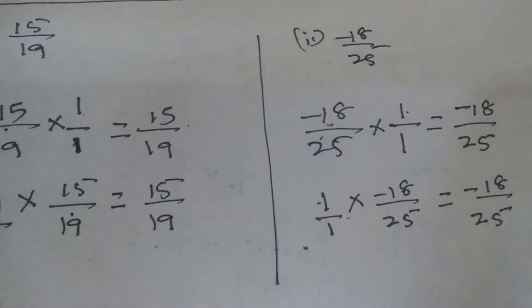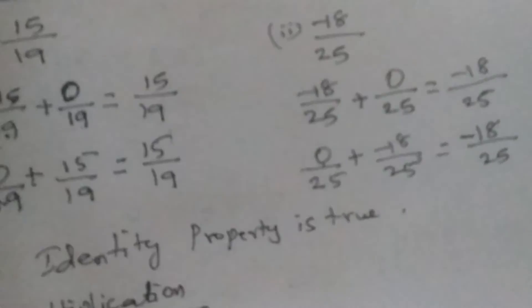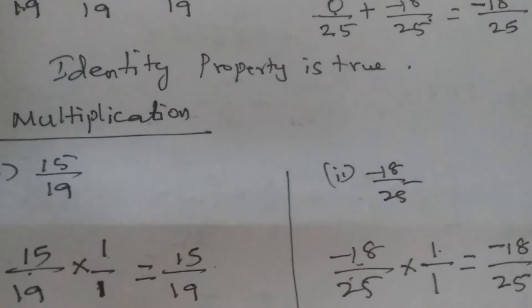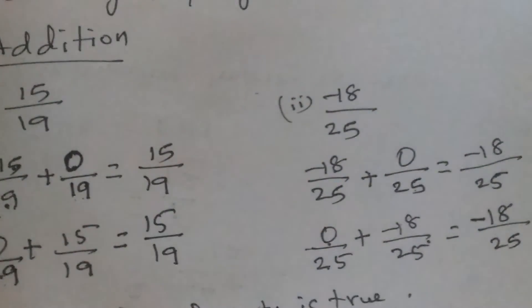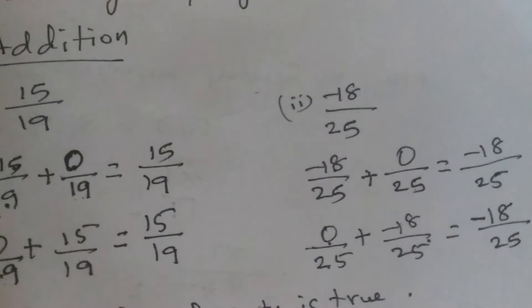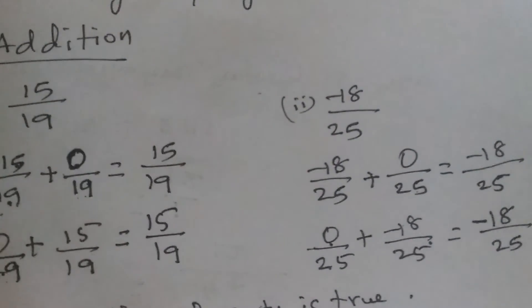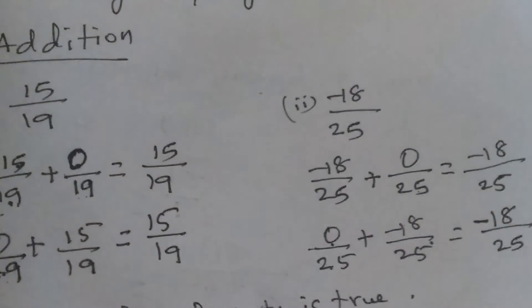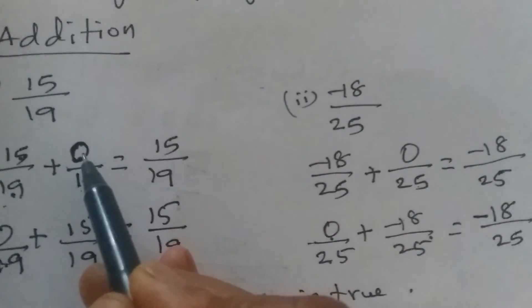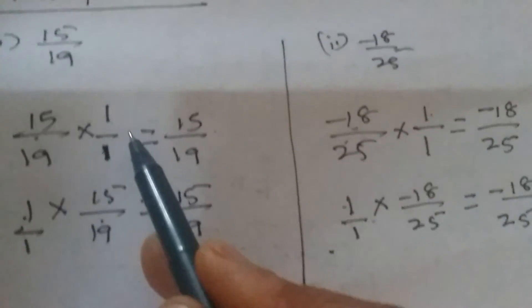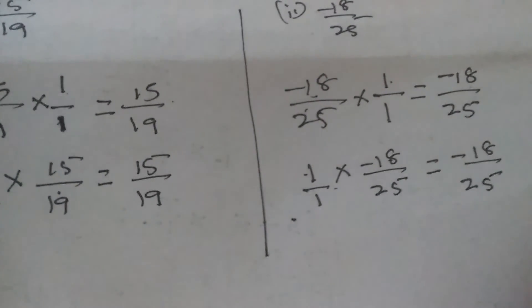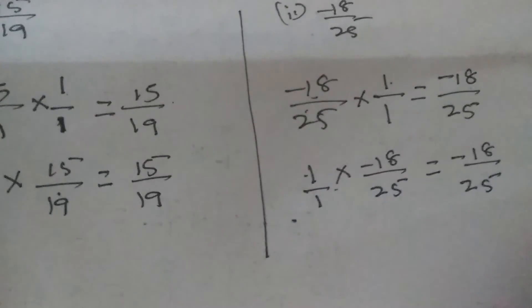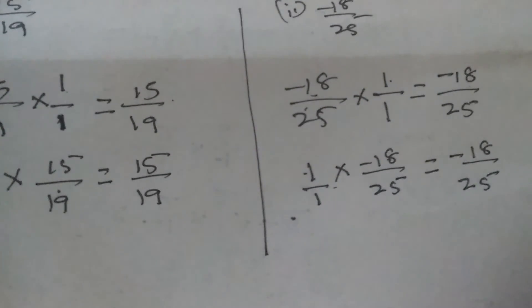Why do we use 0 for addition and 1 for multiplication? Because the identity element of addition is 0 — only when you add with 0 do you get the same number. And the identity element of multiplication is 1 — only when you multiply by 1 do you get the same number. That is why we check addition with 0 and multiplication with 1. The rest of the sums we will see in the next video. Thank you for watching.